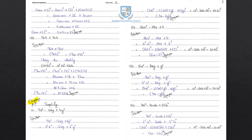Next, question number 8 of Exercise 9: simplify. Part 1: 9x square minus 12xy plus 4y square. In the solution, we write 9 in exponential form as 3 square, so 3 square x square minus 12xy plus 4 in exponential form as 2 square y square.